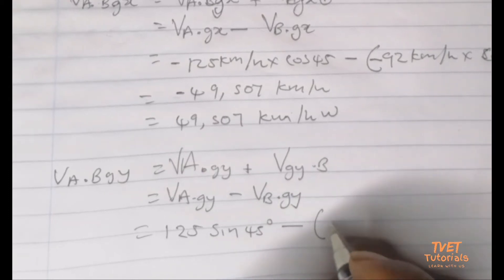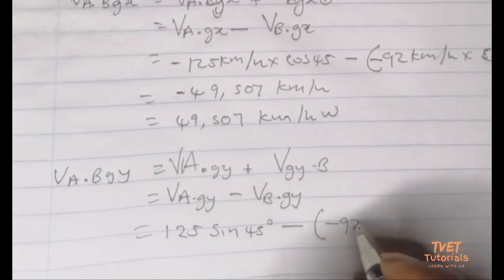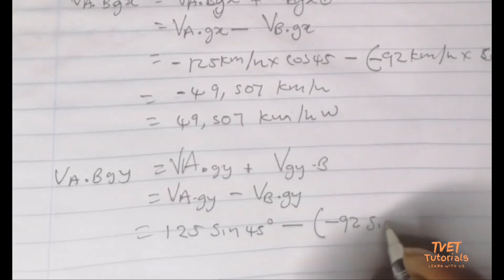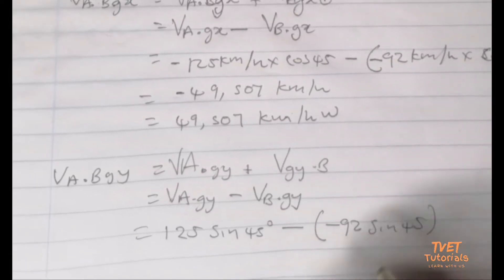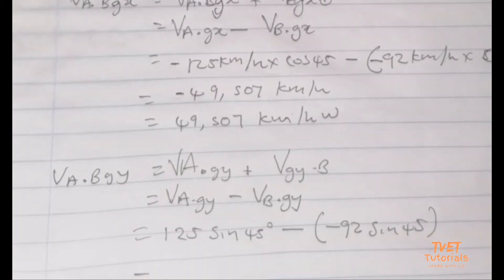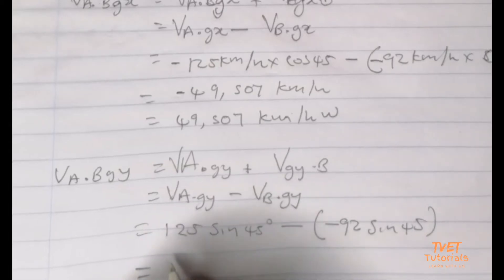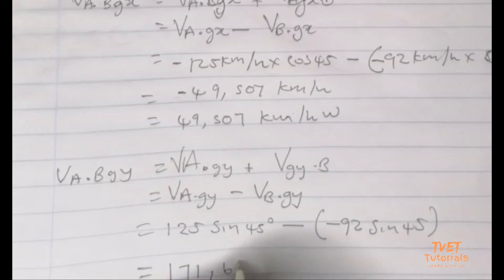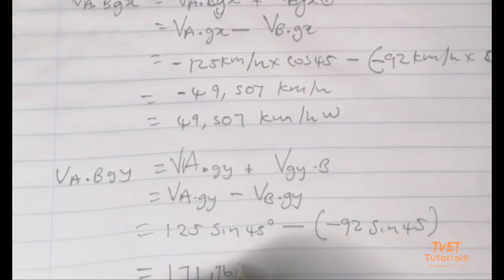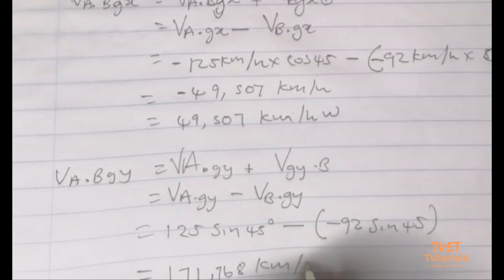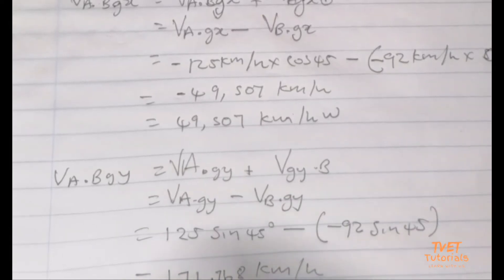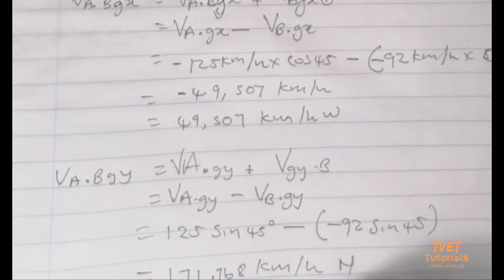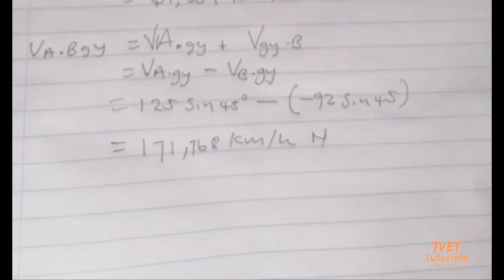We're going to have 125 sin 45° minus, and when we do the horizontal component of the second boat it becomes negative, so we put it as negative 92 sin 45°. We paste this into our calculator and find our answer as 171.6768 kilometers per hour. Since it is positive, it means it's in the direction of north.